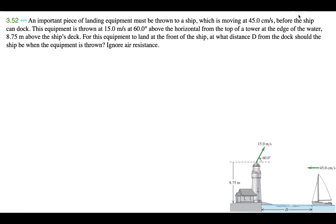Okay, so an important piece of landing equipment must be thrown to a ship which is moving at 45 centimeters per second before the ship can dock. This equipment is thrown at 15 meters per second at 60 degrees above the horizontal from the top of a tower at the edge of the water, 8.75 meters above the ship's deck. For this equipment to land at the front of the ship, at what distance d from the dock should the ship be when the equipment is thrown? Ignore air resistance.